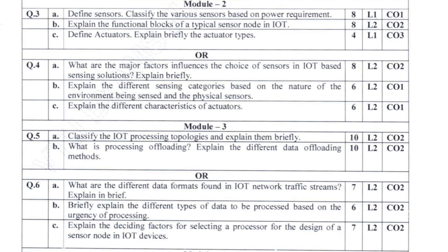Now Module 2 — define sensor and classify various sensors based on power requirements. You will be defining what a sensor is and the power requirements for sensors. Then B is the functional blocks of a typical sensor node, where you will draw the functional blocks. And define actuators and its types — you will explain what an actuator is and list down the types. The marks split for these three is 8-8-4.